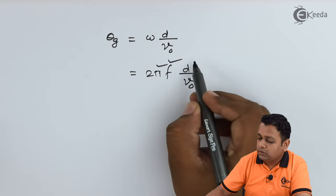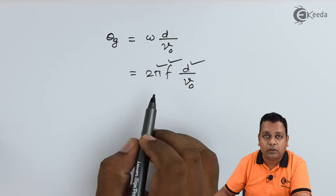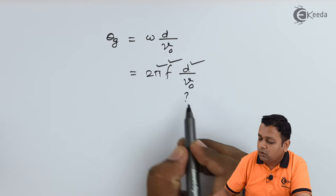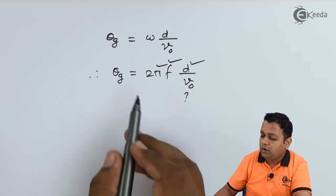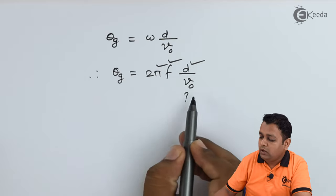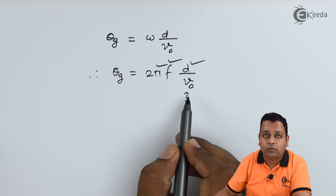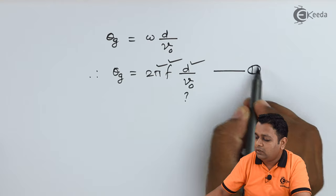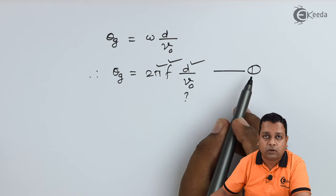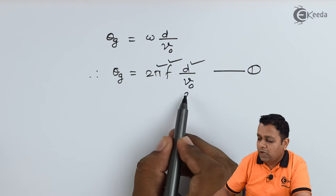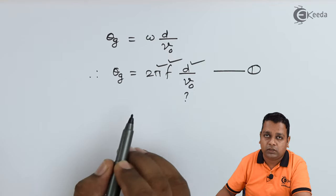π is the constant here, and small d represents the gap spacing that is 2 mm, so this value is also available. V0 is not available with us. So for determination of θ_G we require first of all the value of V0. Let this equation be equation number 1. We first of all get the value of V0 and substitute here.